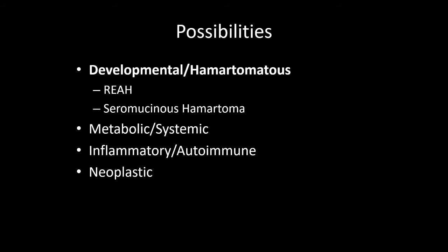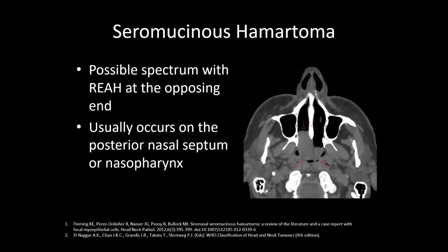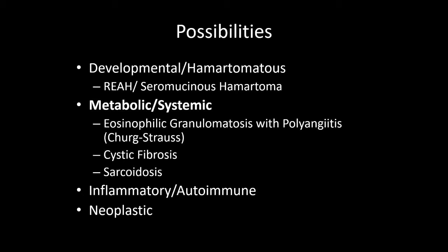Considering developmental or hamartomatous possibilities: one is the respiratory epithelial adenomatoid hamartoma, or REAH. The majority of REAHs occur on the posterior nasal septum, have a male predominance, and occur in the third to ninth decade of life — all of which match our case. Another possibility is the seromucinous hamartoma, which many believe may lie on a spectrum with REAH at the opposing end. These usually occur on the posterior nasal septum or nasopharynx, and an image from a case report matches our case closely. Since the WHO suggests these lesions may lie on a spectrum, I'll be combining REAH and seromucinous hamartoma as one consideration.